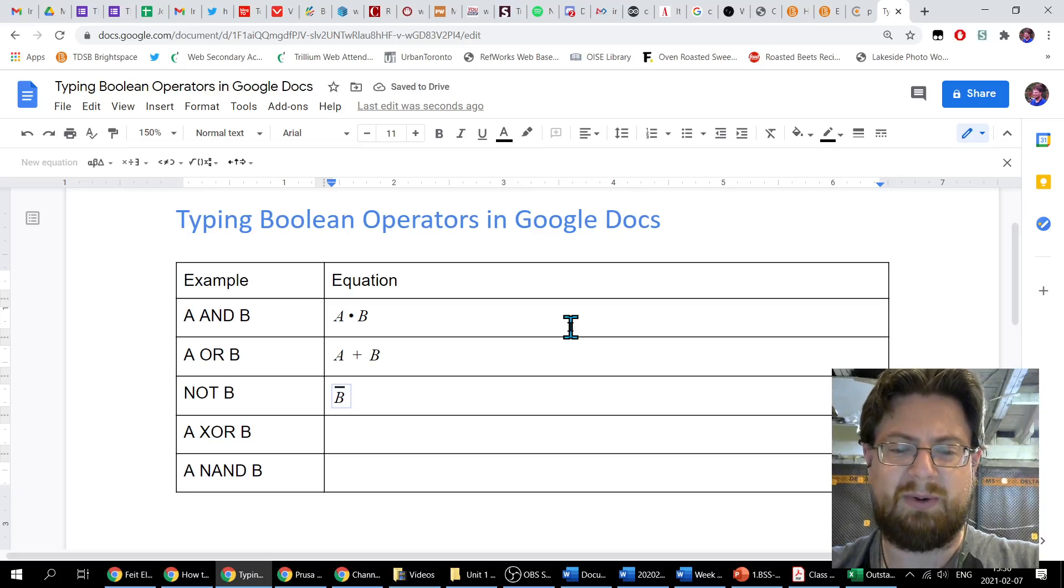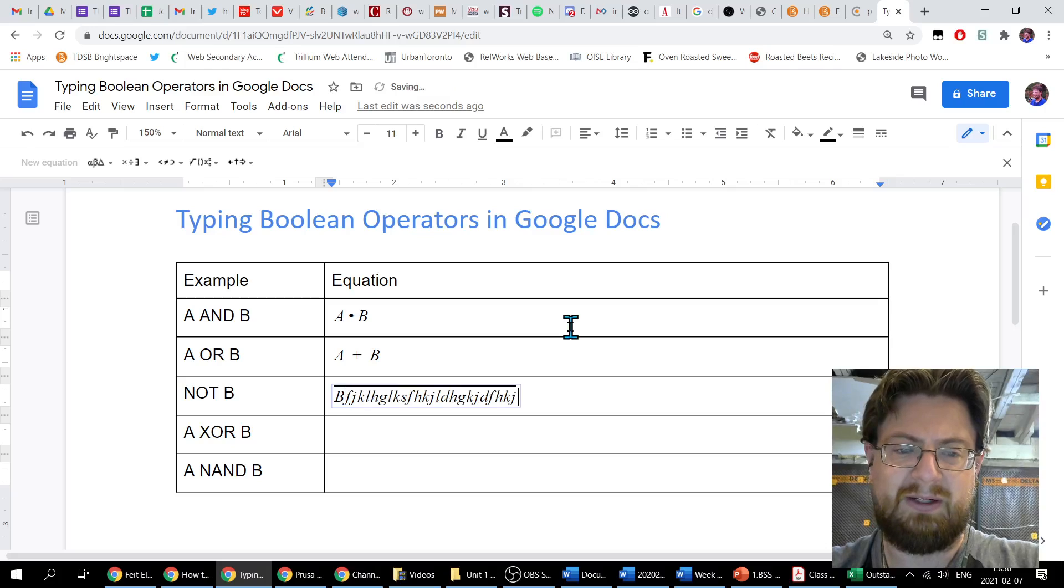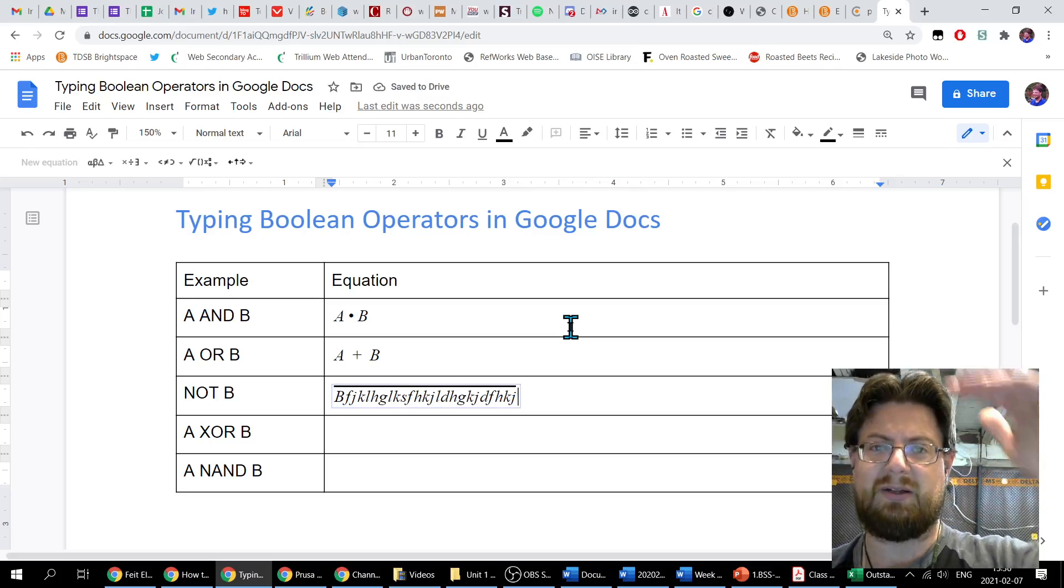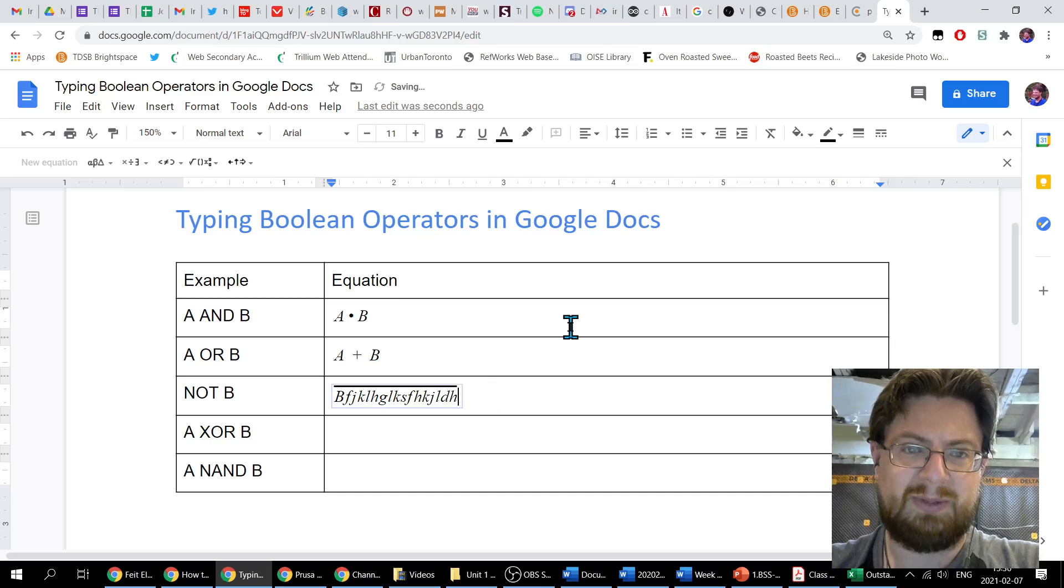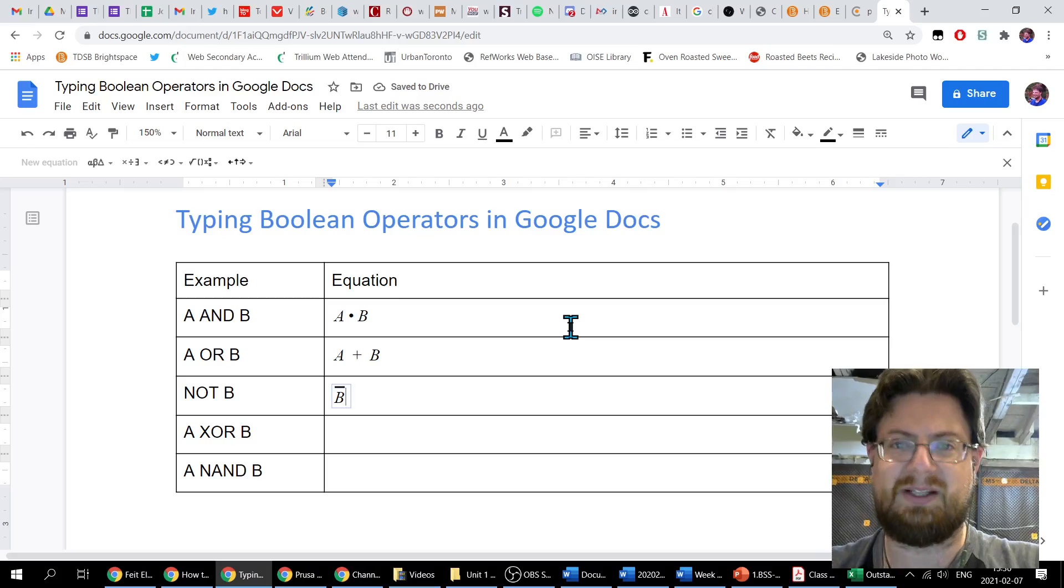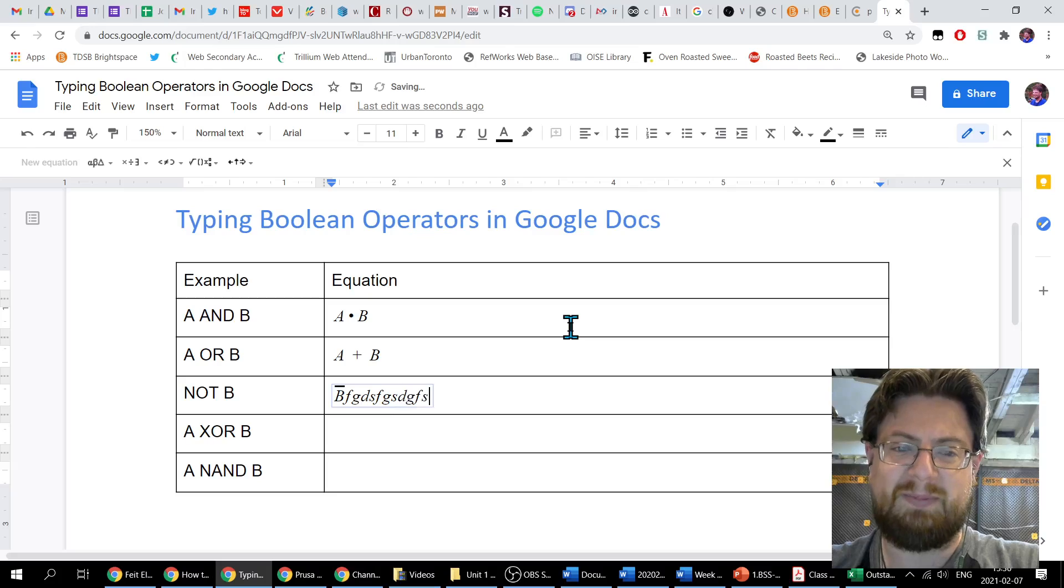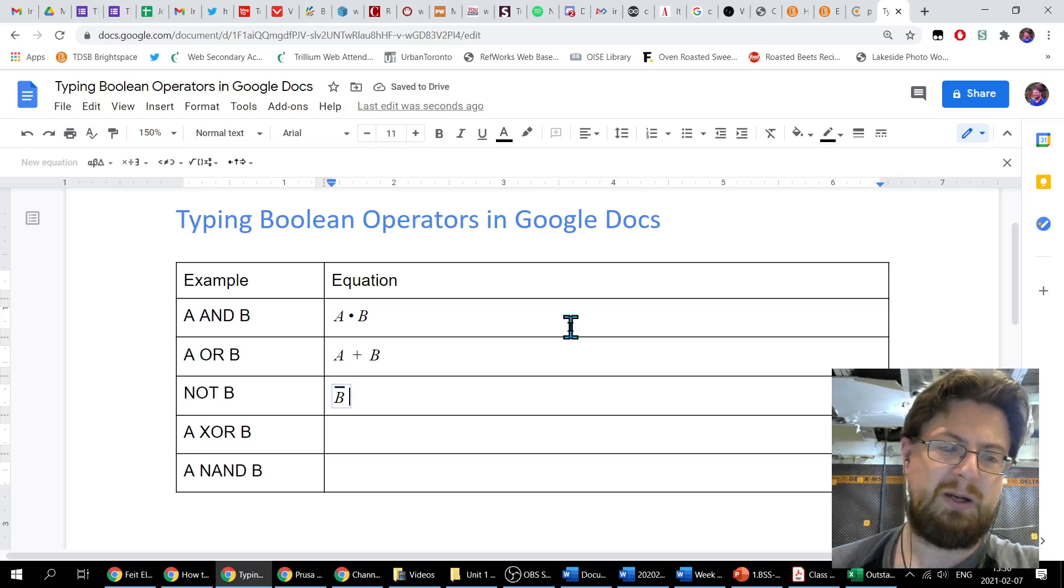And just so you know, if I were to type in a whole bunch of stuff here, it'll all show up with the line on top of it. So sometimes you only want to have the line over one thing. When you're done typing the stuff that needs the line, hit enter, and I can go back to typing like normal without the line. So there's my not B.